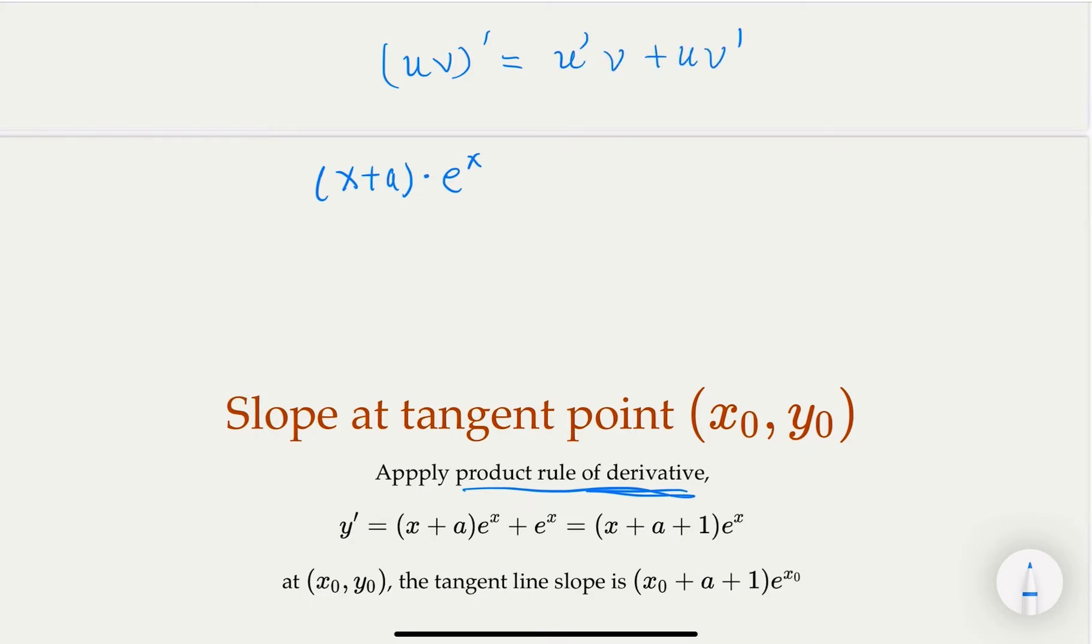Let's do that. In this case, we're going to take the derivative of the first one, which is 1 times e^x, and then plus u, which is the same x + a, times e^x. The exponential derivative is the same. So we're going to combine that and get the derivative.